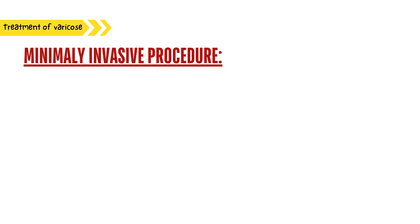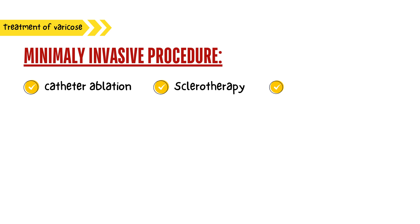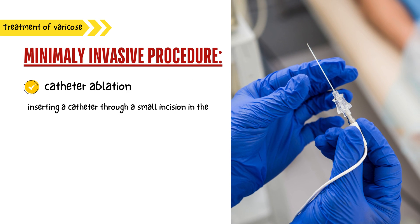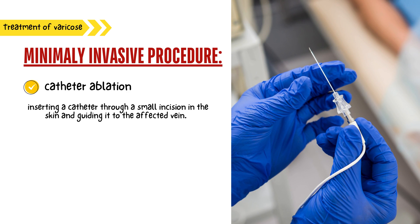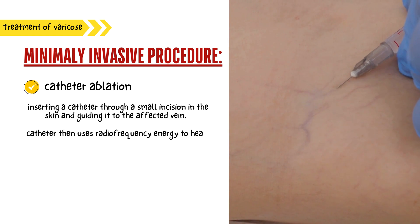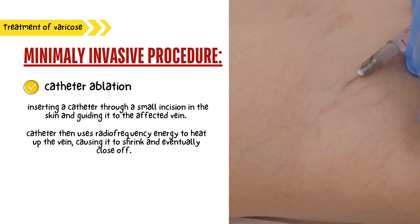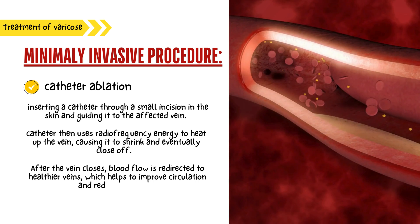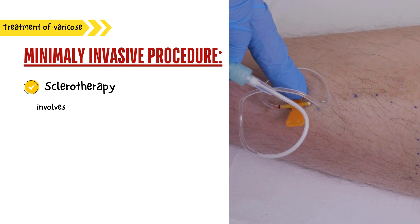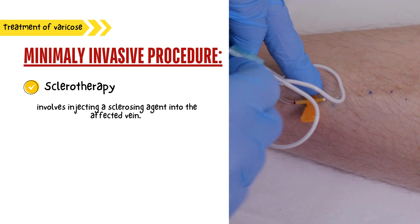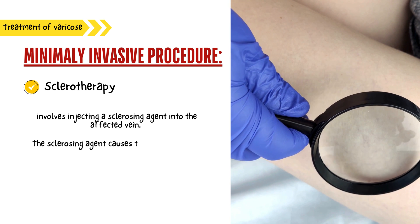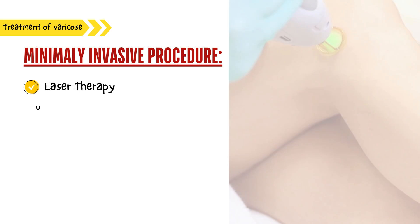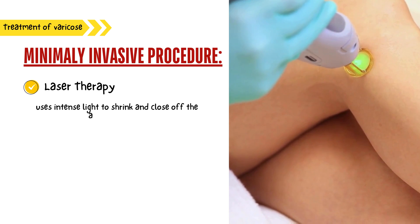Minimally invasive procedures such as catheter ablation, sclerotherapy, or laser therapy can help close off damaged veins and improve circulation. Catheter ablation involves inserting a catheter through a small incision, guiding it to the affected vein, and using radiofrequency energy to heat and close the vein, redirecting blood flow to healthier veins. Sclerotherapy involves injecting a sclerosing agent into the affected vein, causing it to become inflamed and close off. Laser therapy uses intense light to shrink and close off the affected veins.